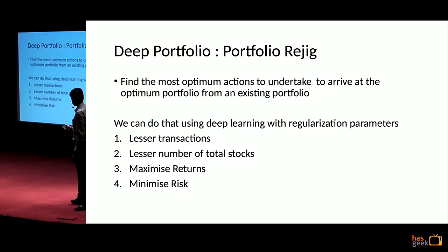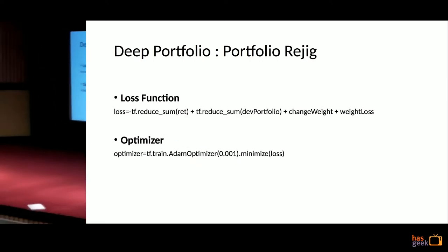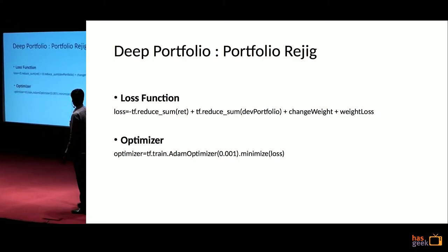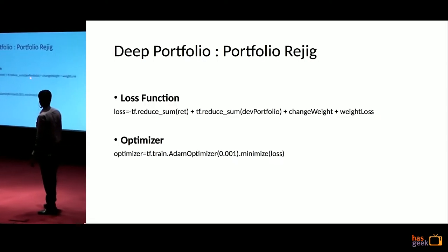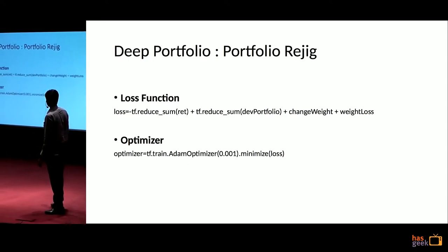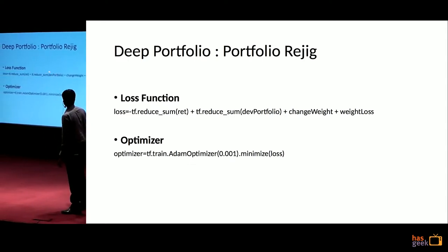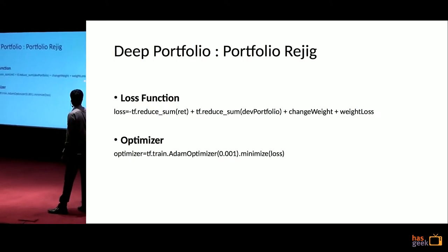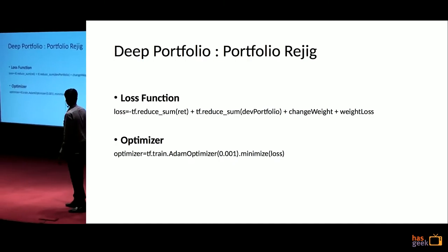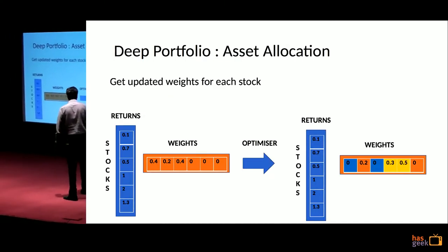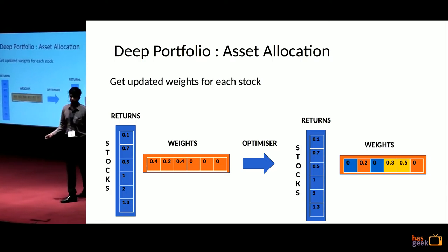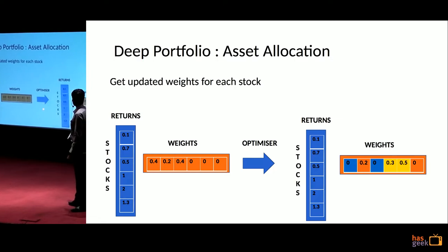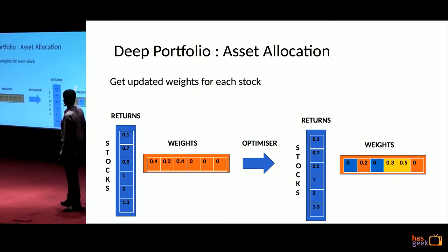We want lesser number of total stocks — needless to say, maximize returns and minimize risk. I've written a TensorFlow code using a loss function where we have returns and portfolio deviation. Returns must be maximized (negative sign), deviation must be minimized, and transaction costs must be minimized. This becomes your loss function. You can use any optimizer. You take returns of original plus new stocks, initialize zero weights for the initial vectors, pass through the optimizer, and you get updated weights that have taken into account all the different factors.